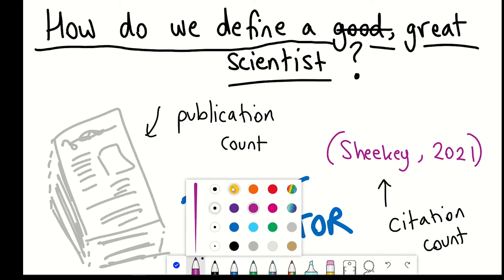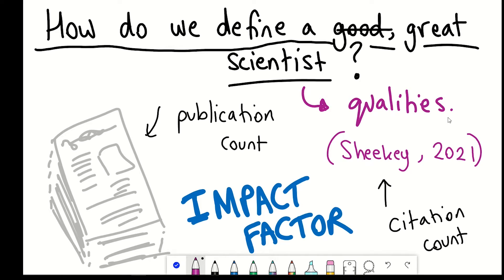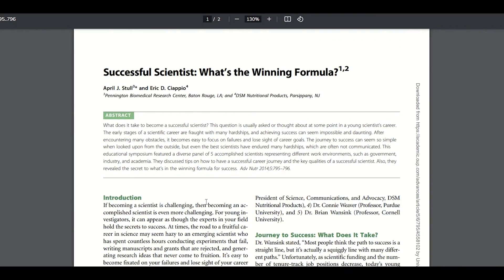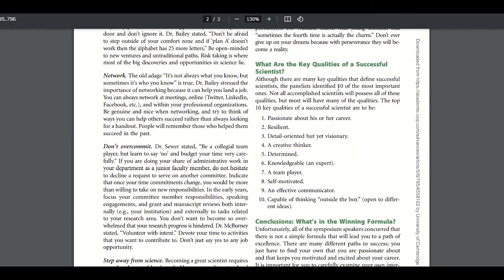An alternative is to look at the qualities of good scientists. And according to this article, there are 10 qualities that define successful scientists. Not all accomplished scientists will possess all of these qualities, but most will have many of the qualities.